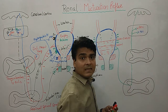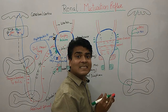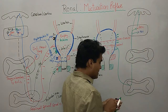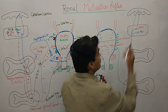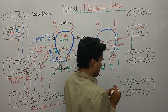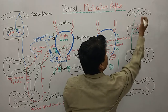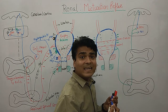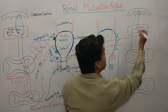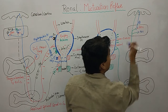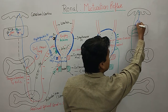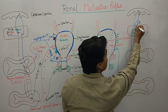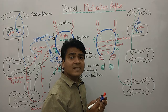The impulses again move to the cerebral cortex. The cerebral cortex takes its decision and sends impulses to the pons. This time it particularly activates the PMC — pontine micturition center — and inhibits the pontine storage center.